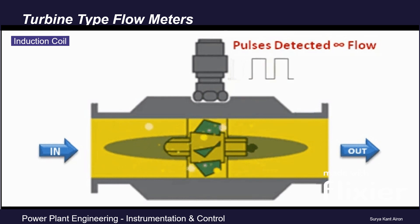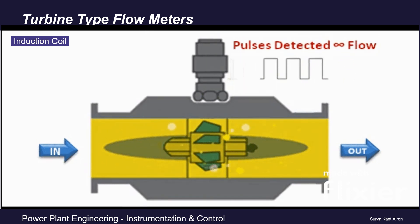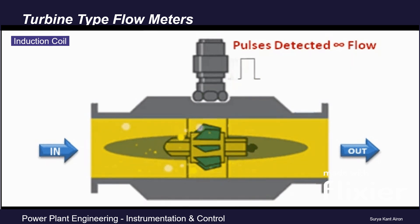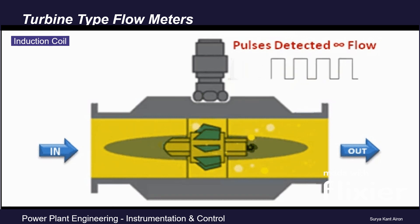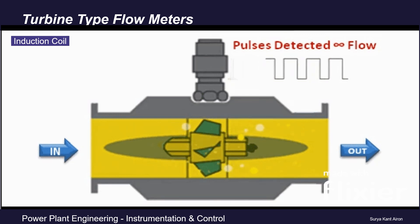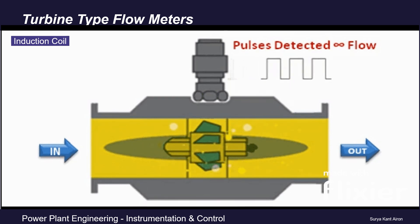Electrical components consist of a pickup sensor system. It has either an induction coil, a Hall sensor, or a photoelectric cell. These sensors transmit signals to a signal transmitter, which is further connected to DCS or PLC. An induction coil generates electrical impulses in direct proportion to rotor speed and transfers them to a recording device.